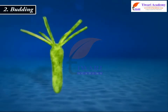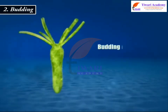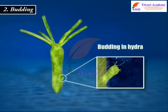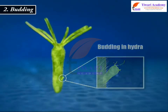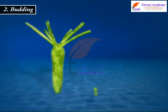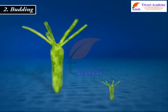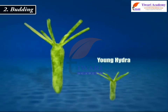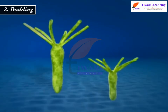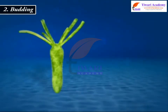Budding is the process in which cells of an organism split into parent and daughter cells. Organisms like sponges and hydra reproduce by means of budding.